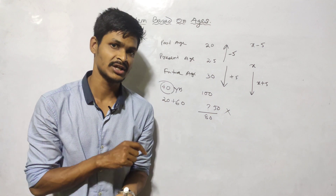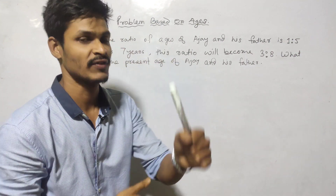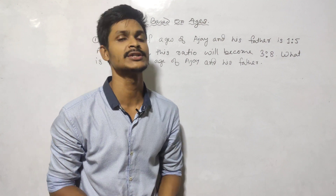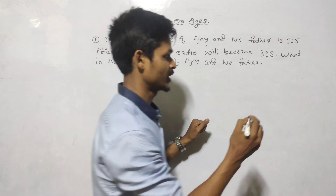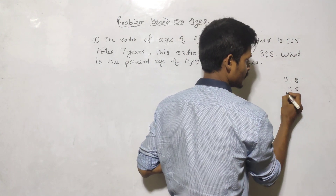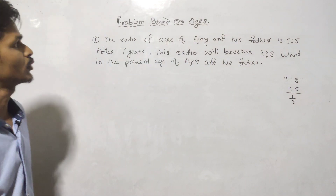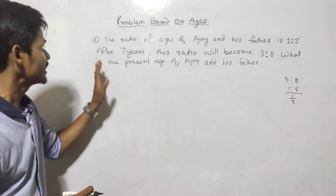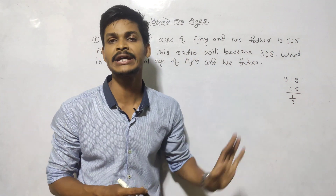So let's start the first MCQ. The ratio of ages of Ojoy and his father is 1 to 5. After 7 years, this ratio will become 3 to 8.